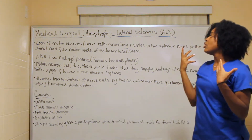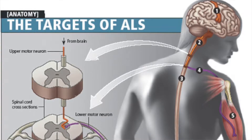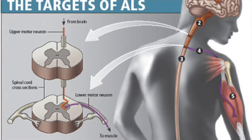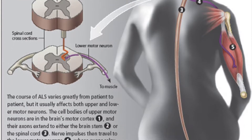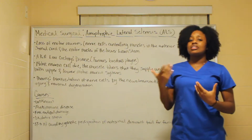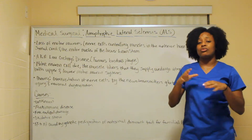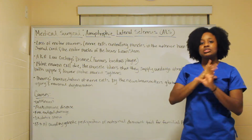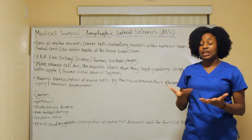To begin with, we have a loss of motor neurons — the nerve cells controlling the muscles in the anterior horns of the spinal cord and the motor nuclei of the lower brain stem. It is also known as Lou Gehrig's Disease, named after a famous baseball player who had gotten this disease.